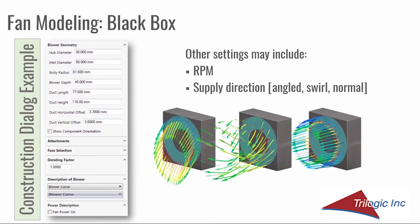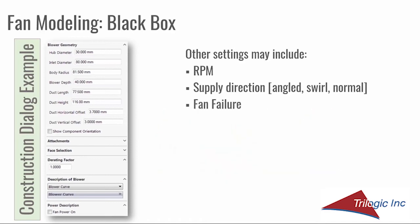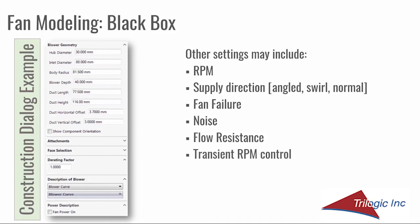Additional inputs include RPM or angular velocity — for an axial fan with swirl or a radial fan, the user can specify RPM or radians per second to allow the software to provide a directional velocity component. For axial fans, there may be an option to specify the exit velocity direction: angled, swirl, or normal. Fan failure is an option to essentially turn the fan off, useful for studying the effect of fan failure including reduced flow and additional openings for recirculation. There may also be an option for fan noise, scaled by the derating factor, and a flow resistance input to capture the effect of a finger guard. Finally, transient RPM control allows fan speed to be controlled by a component temperature in transient analysis, enabling the engineer to develop a control scheme to maintain component temperatures at the appropriate fan speed.